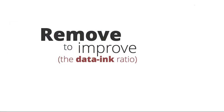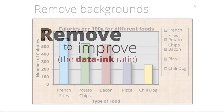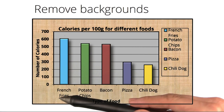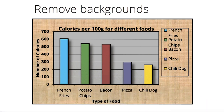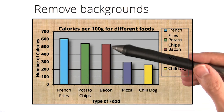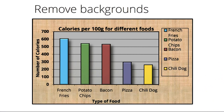In this example, we're going to take a visualization and try to improve its data-to-ink ratio. Here we have a bar chart showing the number of calories for various types of foods. At first glance, we can see examples of bad visualization techniques that we've discussed previously, such as this busy background, poor color choices, and the use of 3D shadowing and gradients.